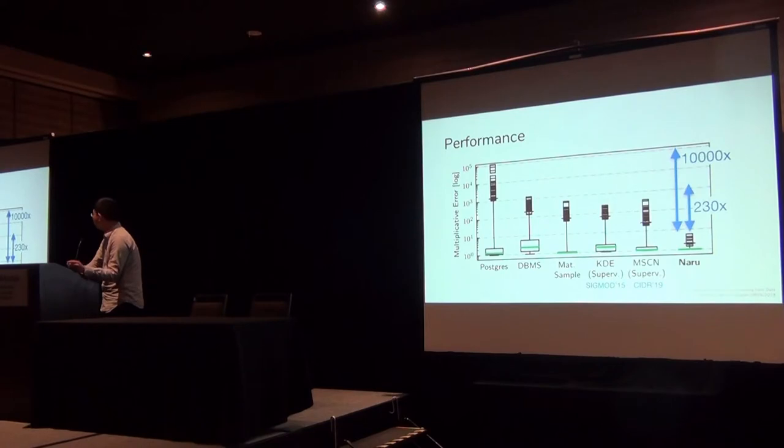A snippet of the performance result for NARU. We can see that NARU can outperform a Postgres optimizer example by up to 10,000 times in terms of estimation accuracy, and a commercial DBMS by up to 230 times. We also evaluated against some state-of-the-art supervised learning method and showed that NARU can outperform them as well.